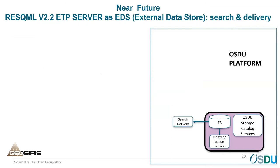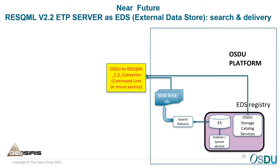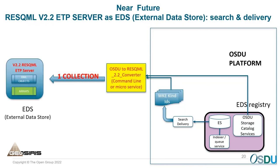Going the other direction: we have search and delivery from the OSDU platform, which selects the relevant work package component elements. We will have an OSDU-to-ResQML converter that creates a collection, and since everything is already known with these addresses in the ResQML server, it will be delivered back to the application.